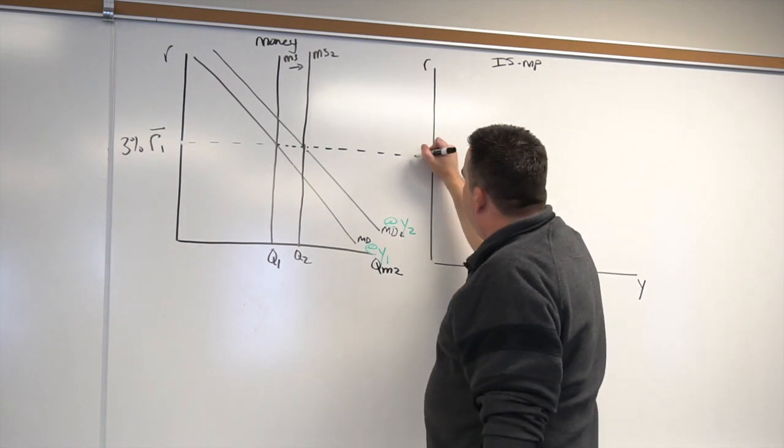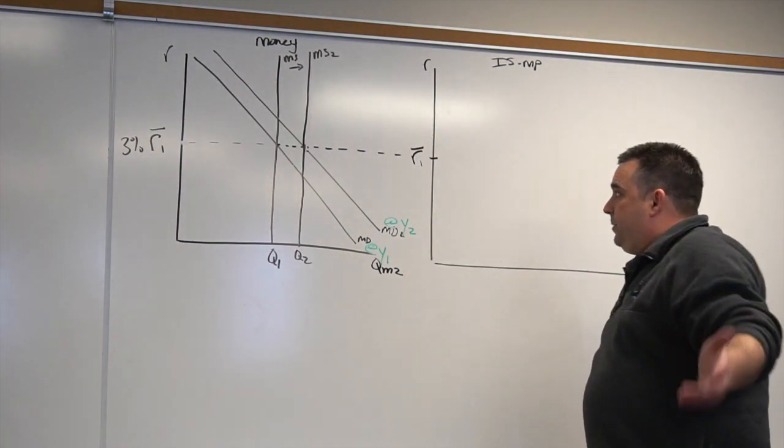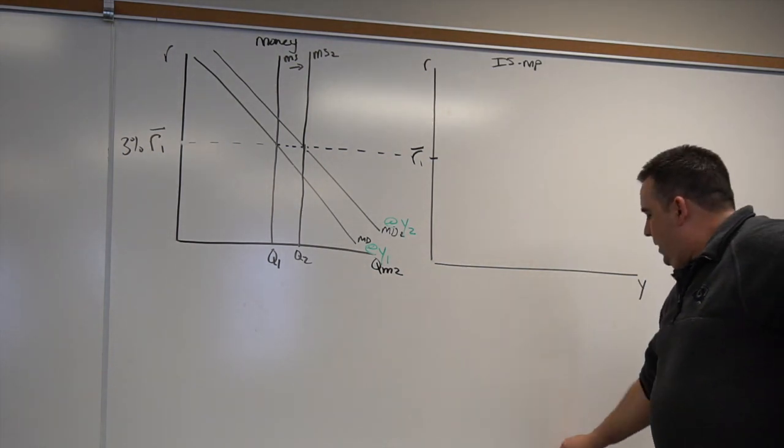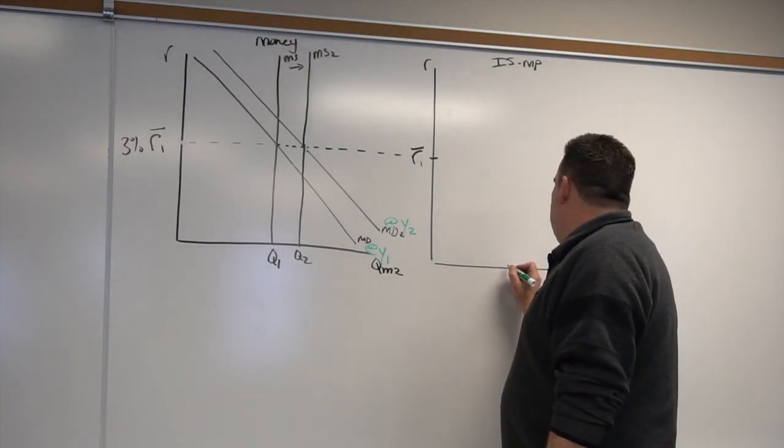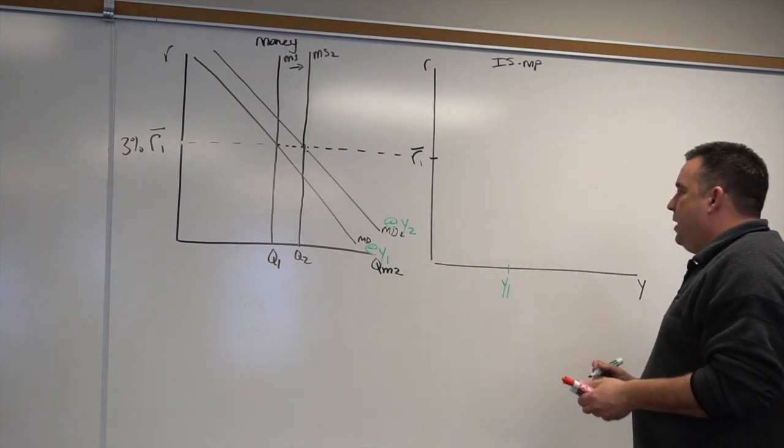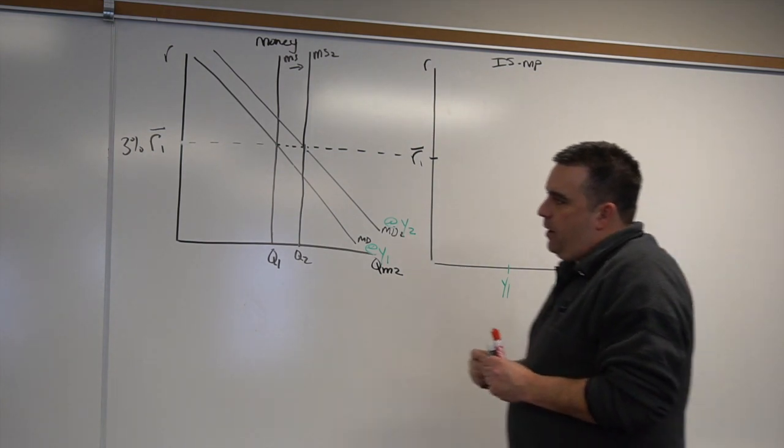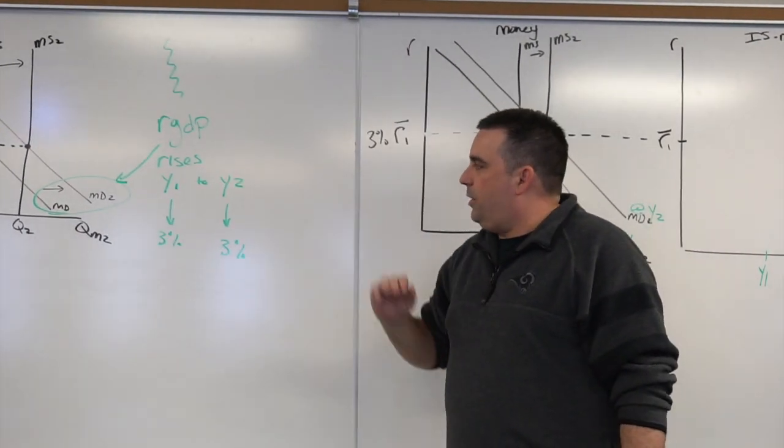So I would have that constant R1 value, again at 3%. Alright, well we would then say money demand one kept us at real GDP one, maybe that's right there, whatever numeric value that is. Money demand two, we went to real GDP two, that's right there. But right over here, Y1 occurred at 3%, Y2 occurred at 3%.